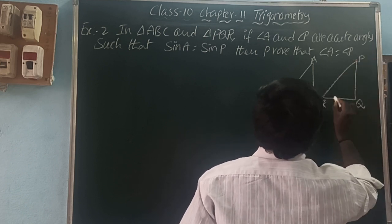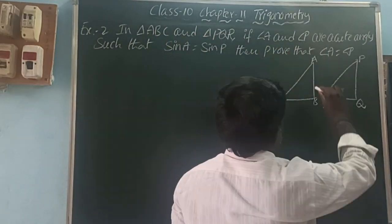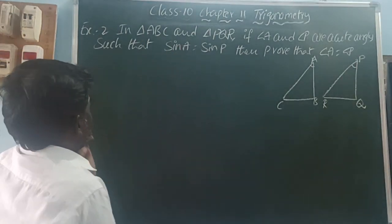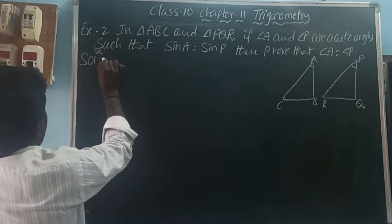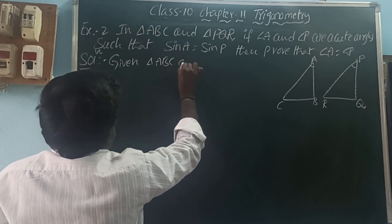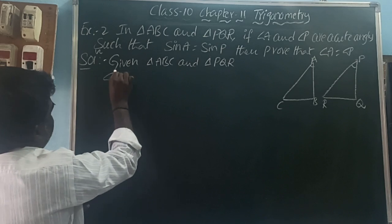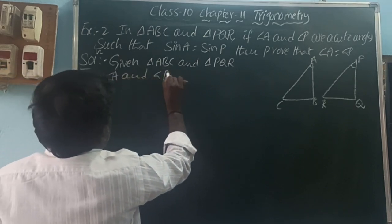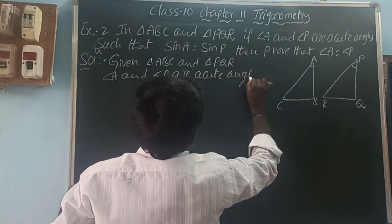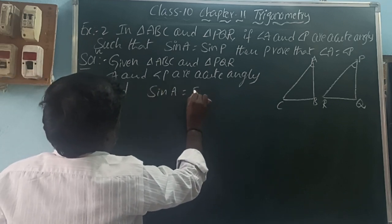So in triangle ABC and triangle PQR, if angle A and angle P are acute angles such that sine A is equal to sine P. Given: triangle ABC and triangle PQR, angle A and angle P are acute angles, and sine A is equal to sine P.